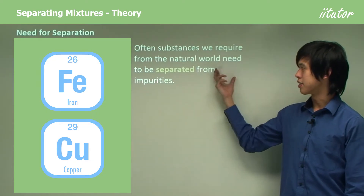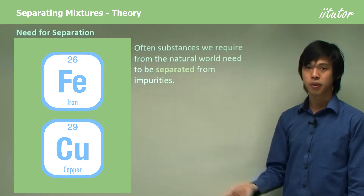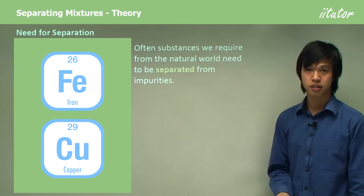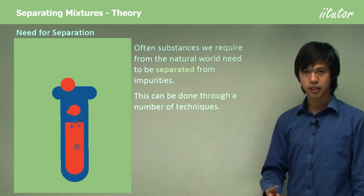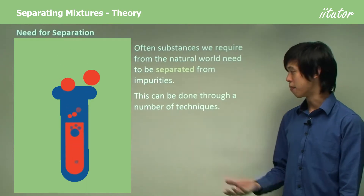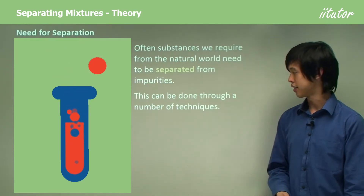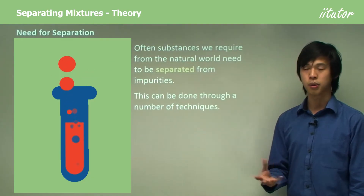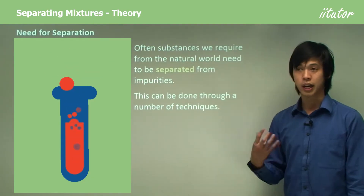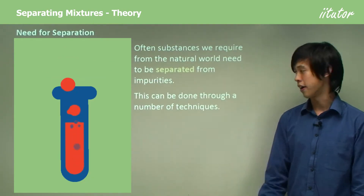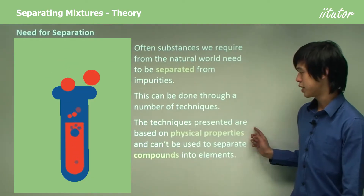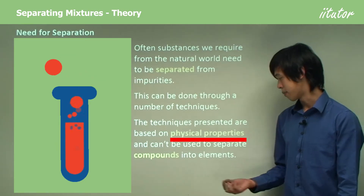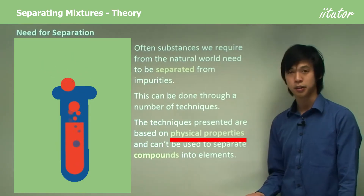Often these natural substances need to be separated from impurities to get the substance that we desire. In order to separate mixtures, we can use a number of different techniques, and these are based on the physical properties of the chemicals that you want to separate. The techniques are based on physical properties and can't be used to separate compounds into elements.